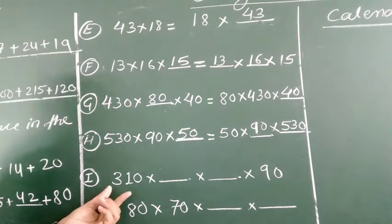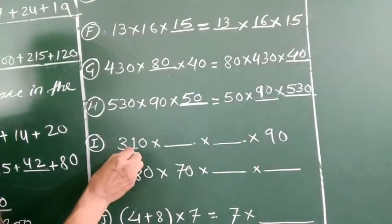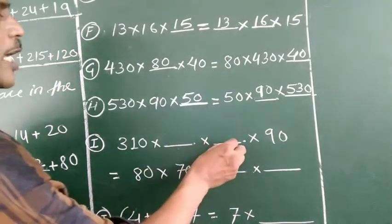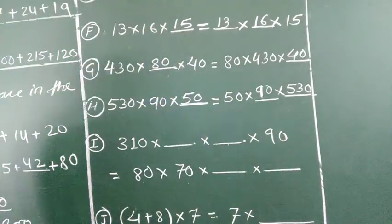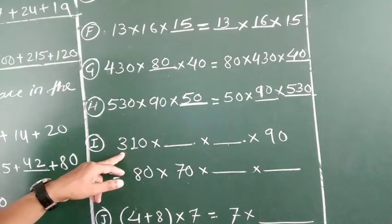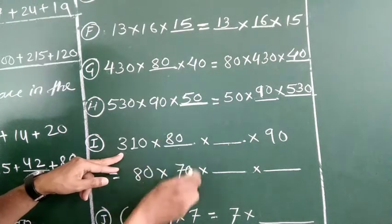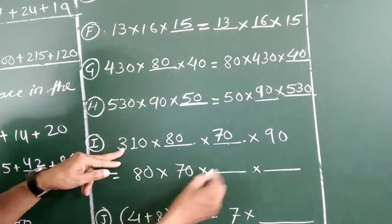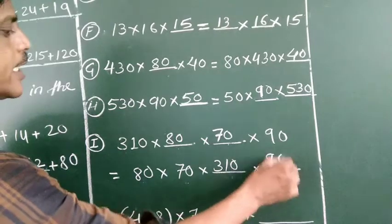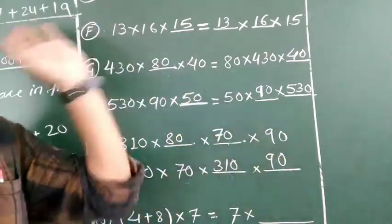Now next it is an example with 4 numbers multiplication: blank into blank into blank into 90 equals 80 into 70 into blank into blank. The number is 310. Here 80 is not on the left side, so put 80 there; 70 is not on the left side, so put 70 there; 310 is not on the right side, so put 310 there. So: 310, 80, 70, 90 — all 4 numbers on each side.